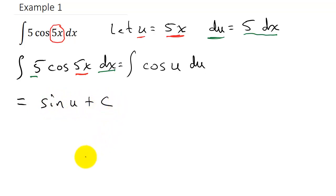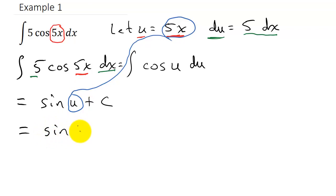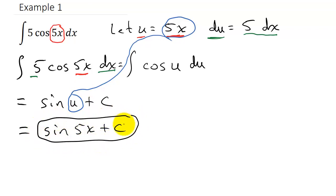My original problem is in terms of x, so I have to get my answer back in terms of x. I'll take what u equals — u equals 5x — and put it back in for u. So that gives me sine of 5x plus c. And there's my answer.